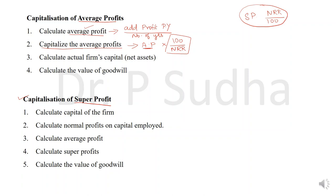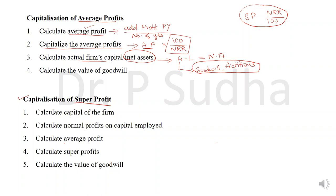The next step is to calculate the firm's capital, that is the net assets. Net asset is nothing but assets minus liabilities — all assets minus all liabilities. When calculating this, exclude goodwill and fictitious assets if given in the balance sheet. Add all the assets apart from goodwill and fictitious assets, then deduct all liabilities — both long term and short term.